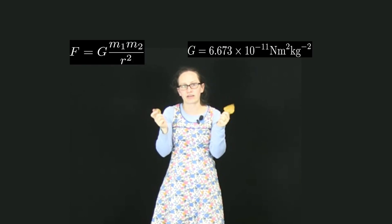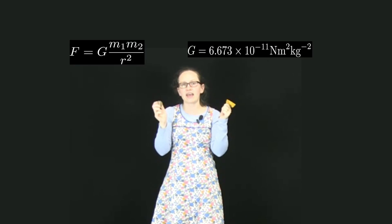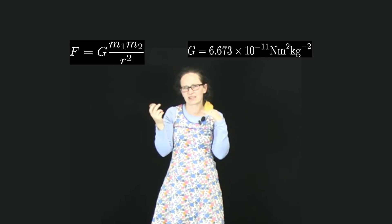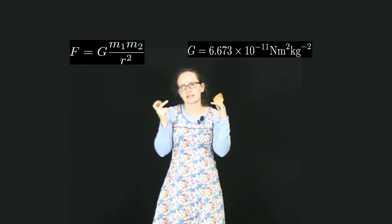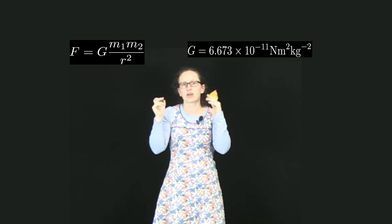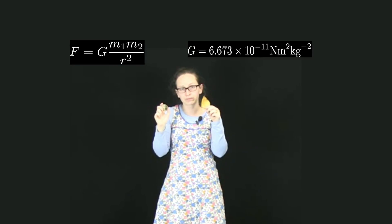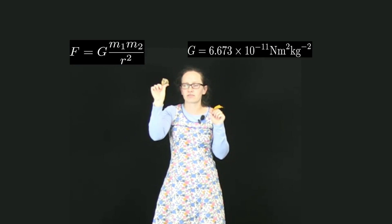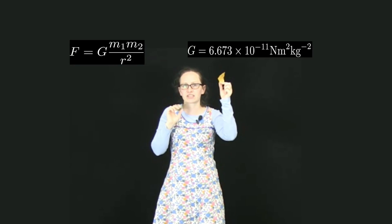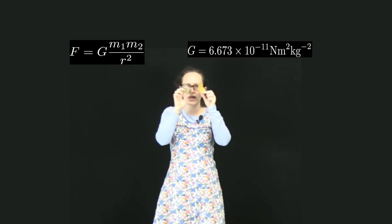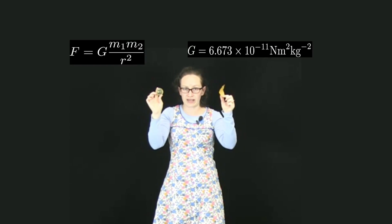The law of universal gravitation can be written as F is equal to some constant, the gravitational constant, which is given the symbol capital G, and is equal to 6.673 times 10 to the minus 11 Newton meters squared per kilogram to the minus 2, times the mass of the first object, times the mass of the second object, divided by the square of the distance between the objects.